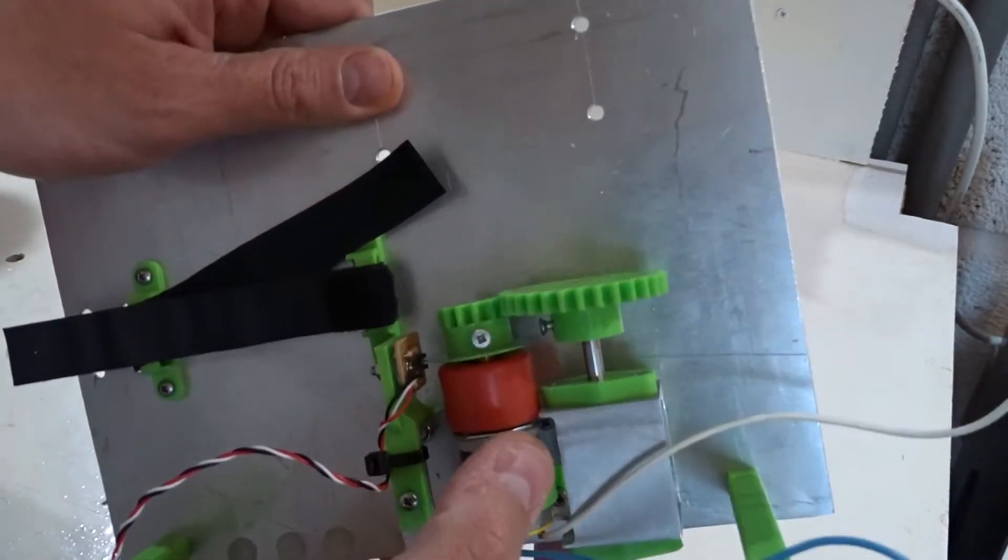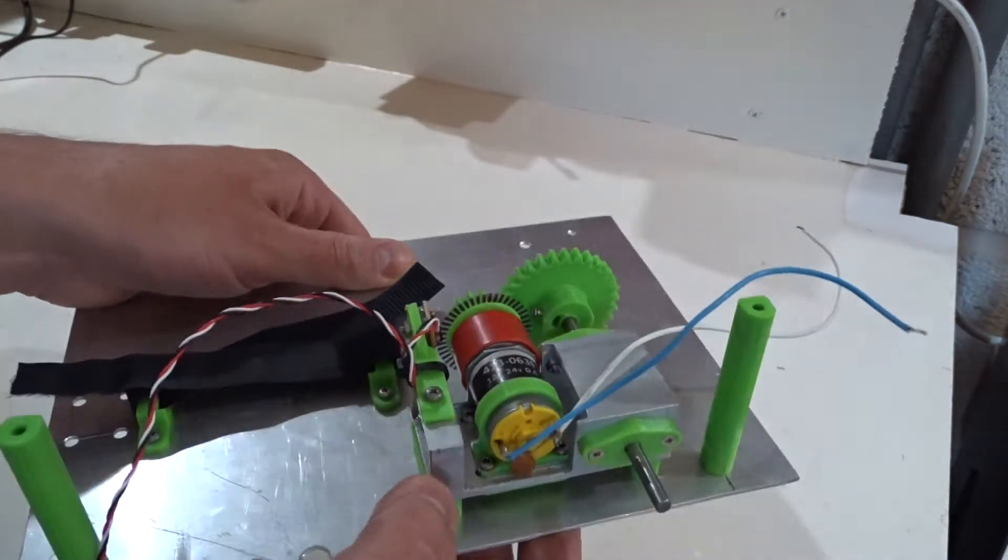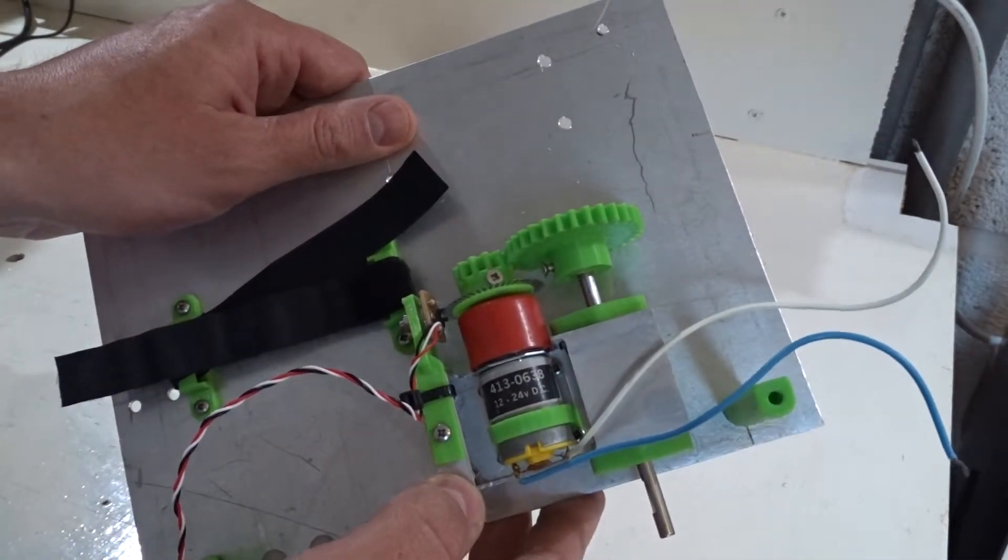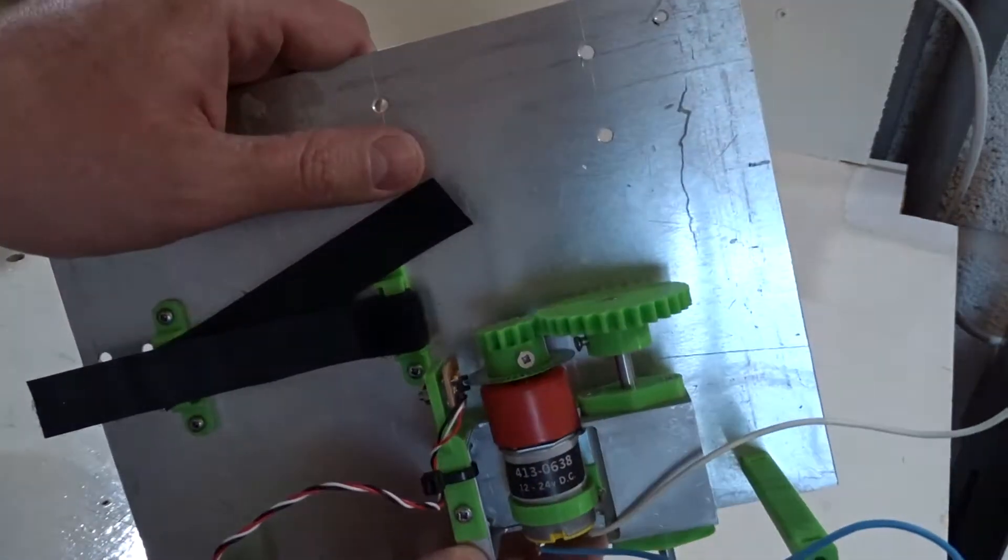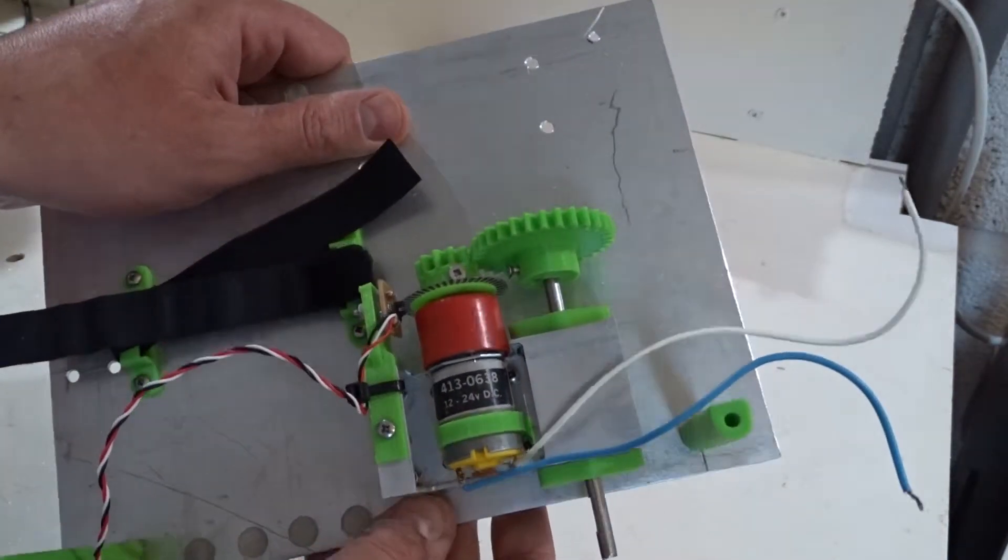So I had a couple of options. Either add a few more spur gears to here and design something, or do something completely different and make a nice compact drive unit in the form of a worm drive gearbox. Fully 3D printed. Which is what I've done.